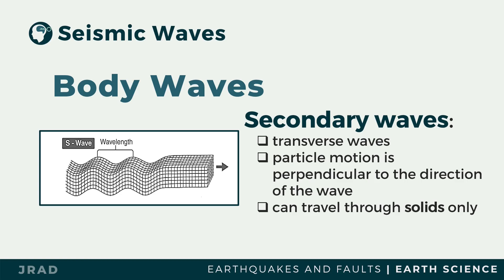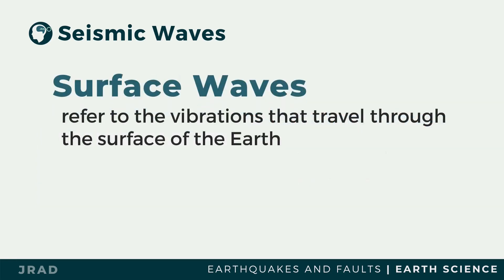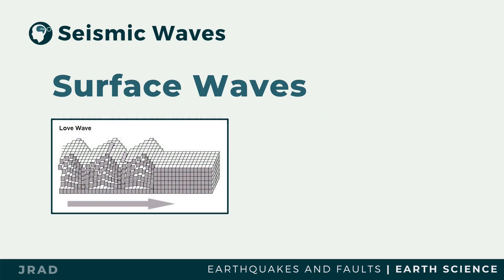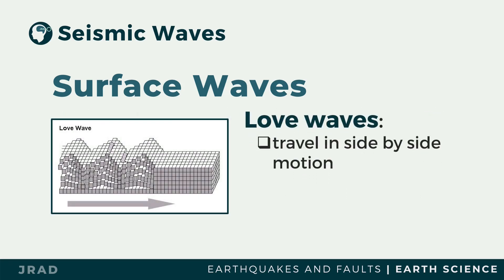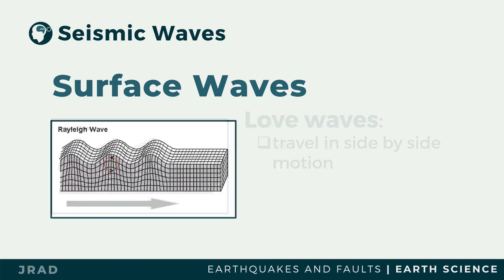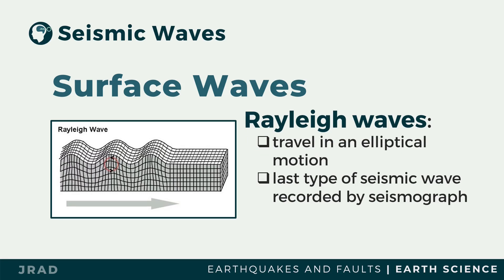Surface waves refer to vibrations that travel through the surface of the Earth and can be classified as Rayleigh waves or Love waves. Love waves travel in a side-by-side motion. Rayleigh waves travel in an elliptical motion and are the last type of seismic wave recorded by a seismograph. However, only body waves are used in studying the Earth's internal structure.